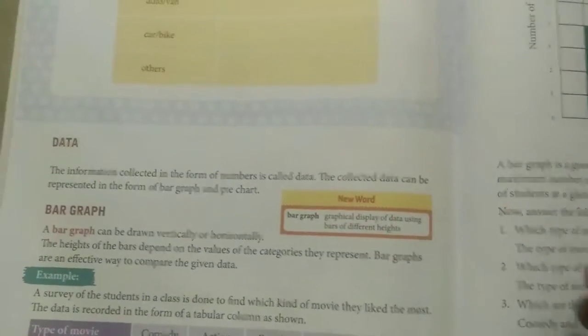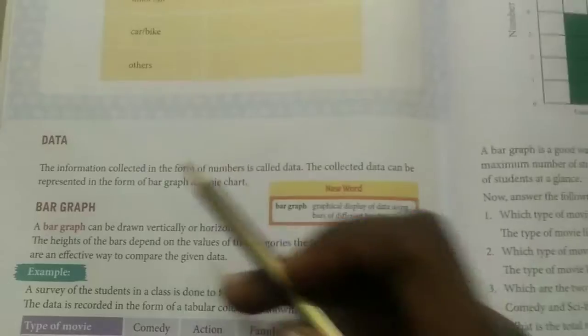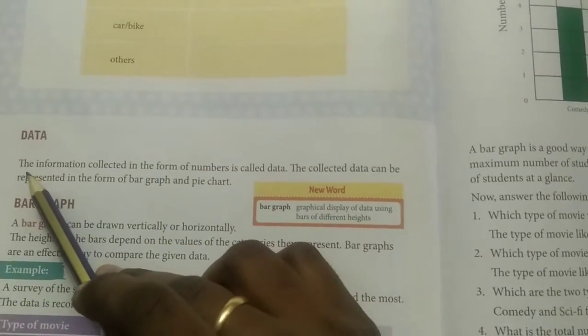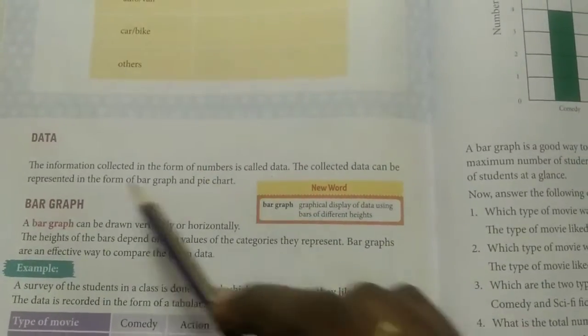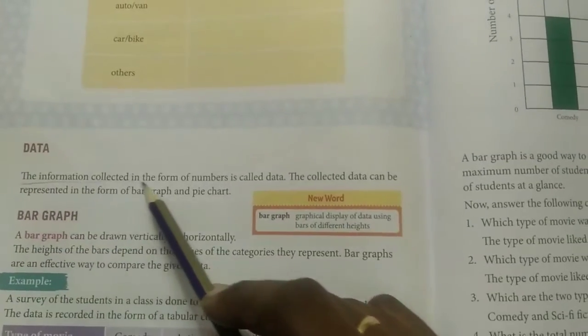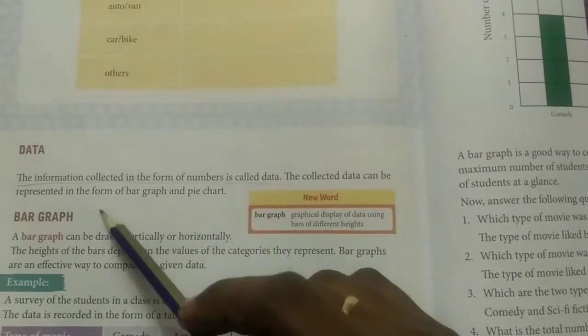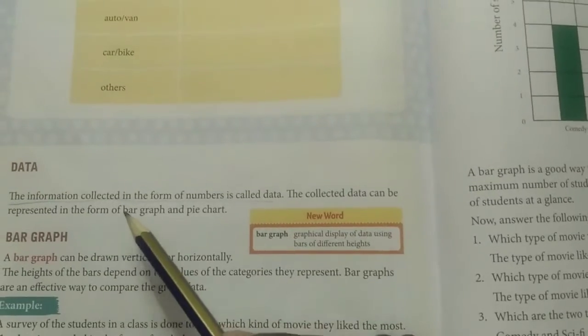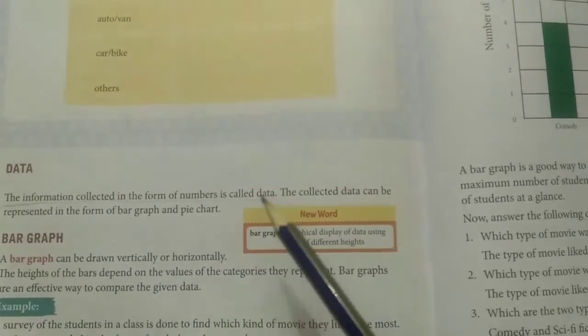Our first heading is Data. Please underline this: the information collected in the form of numbers is called data. The collected data can be represented in the form of a bar graph and a pie chart.